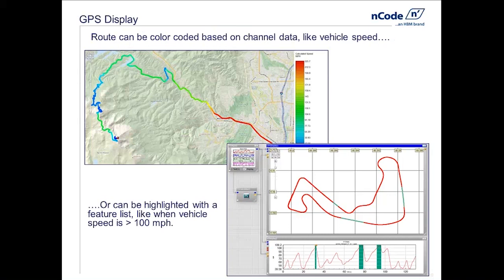Some interesting things we can do in the GPS display glyph: the route can be color-coded based on any channel data. For example, this route is colored based on speed, with green and blue representing low speeds and orange through red showing high speeds. We could also use strain gauge data with our fatigue tools in Glyphworks to plot where damage accumulated along a route, helping us learn about not just the test article, but also the operator — why did the vehicle respond that way, why was it driven where it was.